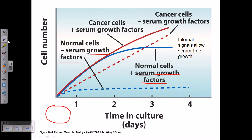Now considering cancer cells — the red dotted line represents the normal cancer cell without growth factor. Without growth factor, normal cells cannot divide after a few divisions because the place becomes crowded and contact inhibition takes place, stopping division. But in the case of cancer cells, even without the growth factor, they grow exponentially because they are essentially immortal. They will grow exponentially even without the serum growth factor.